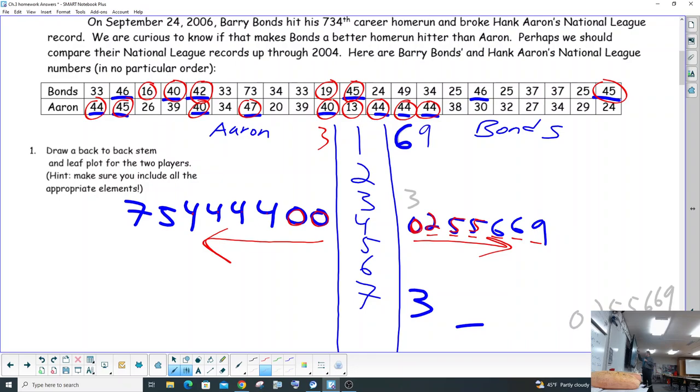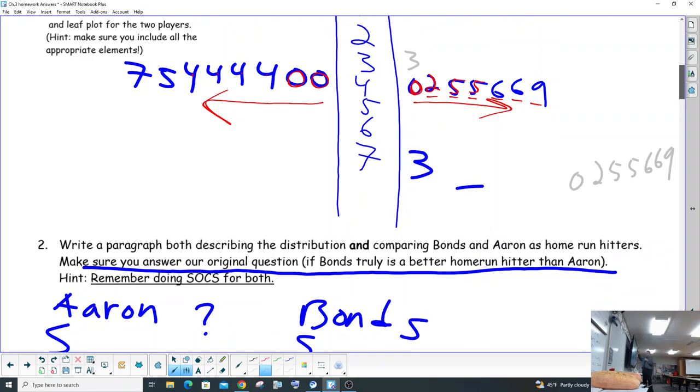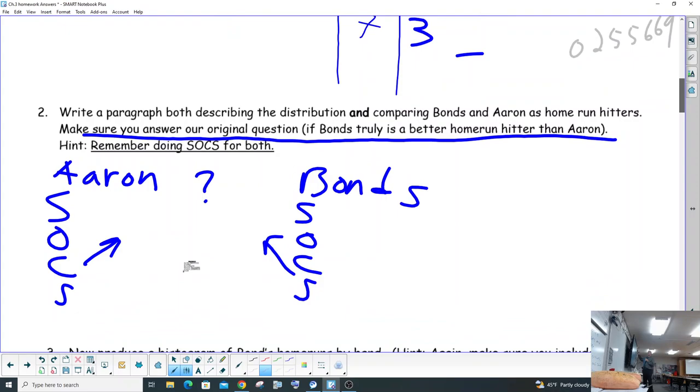It does say to do a paragraph explaining, comparing the two, please write a paragraph both describing the distribution and comparing Bonds and Aaron's home run hitters. Make sure you answer our original question if Bonds truly is a better home run hitter than Hank Aaron or not. Remember doing SOCS for both. So if you're doing AP stats, you would actually write it in a nice paragraph discussing the shape, outlier, center, spread of our data, average and median. Since we're in regular statistics, we're just going to focus on the SOCS only and not make it so much in a paragraph format.